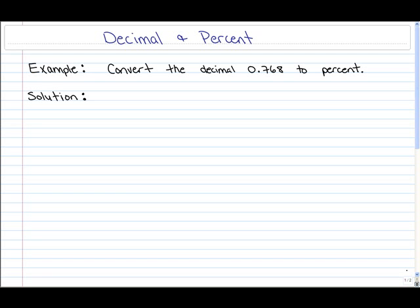To convert a decimal number to a percentage, all we would have to do is simply move the decimal point two places to the right. Or another way you can look at it is just to simply multiply your decimal number by 100. So go ahead and pause the video and try to convert this decimal number to a percent.